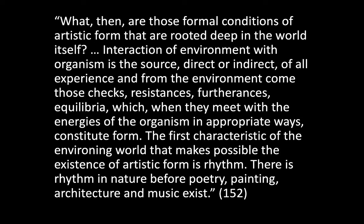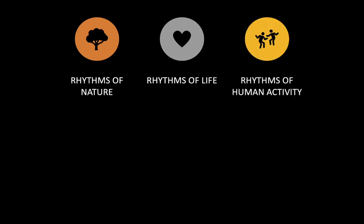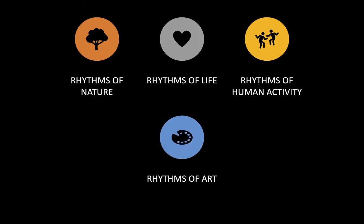Rhythm is playing a really important role in Dewey's account. Dewey tells us that rhythm is the core formal condition of art that we can see already playing out in nature. As the discussion of the natural history of form goes on, we see a description of the rhythms of nature building onto the rhythms of life, the rhythms of human activity, and all of those things, lastly, informing the rhythms of art. You get this sort of historical account of where rhythm comes from and how these different layers of rhythm accrue throughout the development of life.